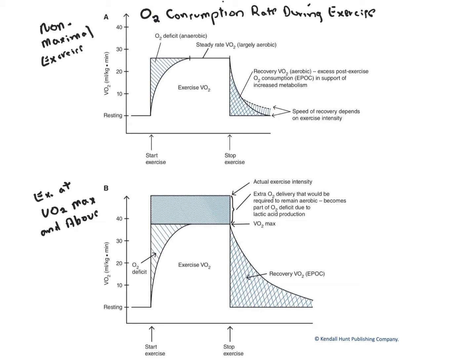Here we look at oxygen consumption rate during exercise. We'll be plotting oxygen consumption, or VO2, as a function of time, indicating the exact points at which the exercise begins and ends, and we're going to do it in two scenarios.